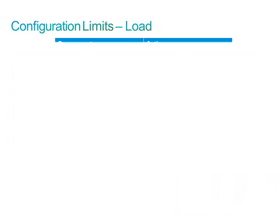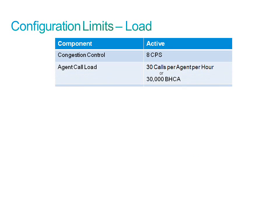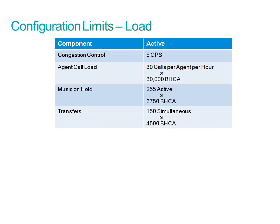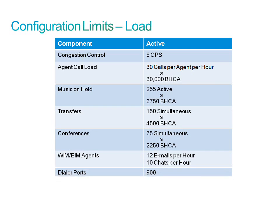For load limits: 2,500 calls maximum. Congestion control monitors system load and gracefully rejects calls when it exceeds a maximum of 8 calls per second, then gradually recovers when the call load drops. Agent call load is 30 calls per agent per hour. Music on hold supports 255 active. Transfers support 150 simultaneous and conferences 75 simultaneous. For web interaction manager and email interaction manager: 12 emails per hour and 10 chats per hour. Dialer ports: 900. Agent and IVR campaigns: 100 total.